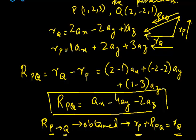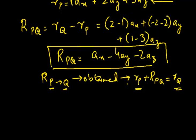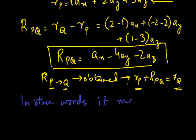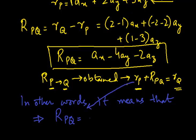In other words, r_P is a vector starting from the origin to point P, and adding r_PQ to it gives the resultant r_Q. So we can straightforwardly write from this equation that r_PQ is equal to r_Q minus r_P.